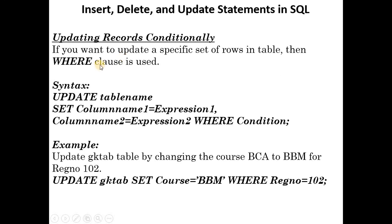If you want to update only a specific set of rows, use a WHERE clause along with UPDATE and SET. The syntax is: UPDATE table_name SET column1 = expression1, column2 = expression2 WHERE condition — so only rows satisfying the condition are updated.